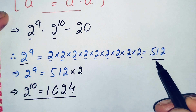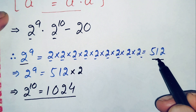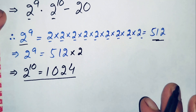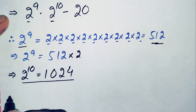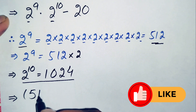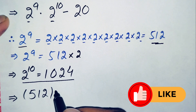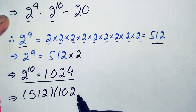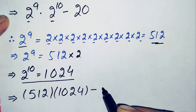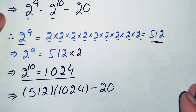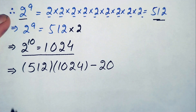So now in this equation we will replace 2 raised to power 9 with 512 and 2 raised to power 10 with 1024. This implies the equation will become 512 times 1024 minus 20.